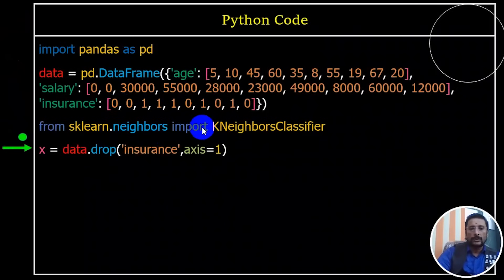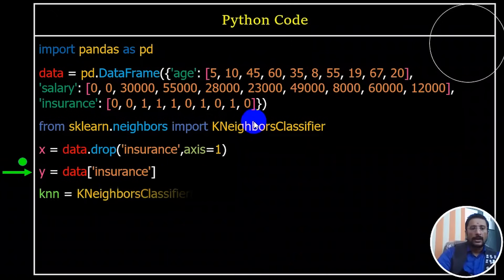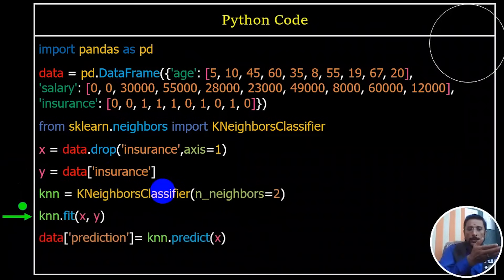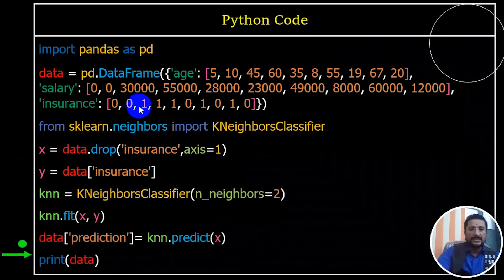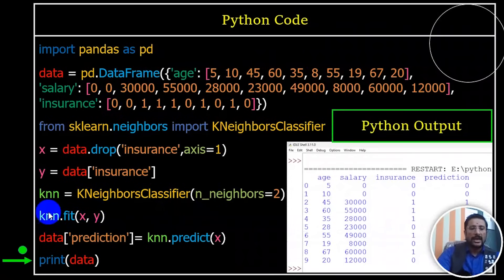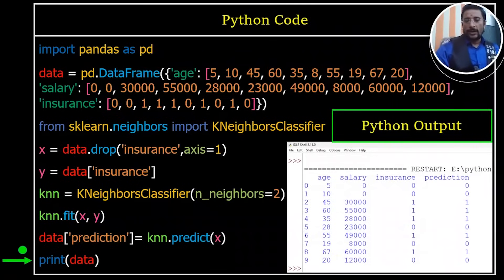Let's test the algorithm — let's import K-Neighbors Classifier. This is the actual algorithm: K-Neighbors Classifier. That is why we put X in Excel and drop the insurance column. We put X in Excel while there is insurance. K-Neighbors Classifier algorithm is a binary classifier. I will train the K-Neighbors Classifier algorithm.